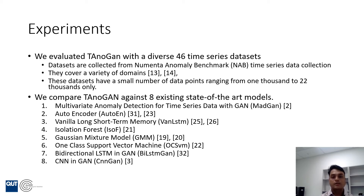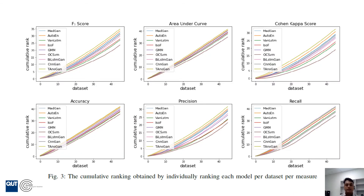We compare our TANUGAN model against eight existing models: MATGAN, Autoencoder, Vanilla LSTM, Isolation Forest, Gaussian Mixture Model, 1-class SVM, Bidirectional LSTM in GAN setting, and CNN in GAN setting. This figure shows the cumulative ranking of the models for 46 datasets across various measures.